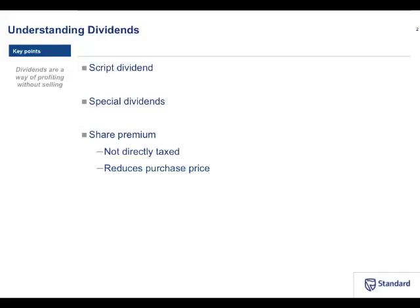Sometimes instead of a dividend, a company will pay you a share premium. In terms of the dates and the amount it works exactly the same, but there is a key point: it's not taxed — it comes to you without having to pay any tax. Importantly, what it effectively does is reduce your purchase price. So if you bought a share at 30 rand and you get a one rand share premium, your purchase price for the share will be adjusted to reflect 29 rand. There is an implication when you ultimately sell those shares — a slightly cheaper purchase price means more profit, and therefore more potential tax on that profit.